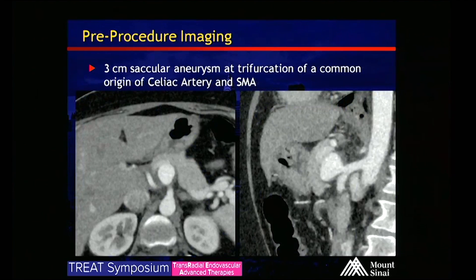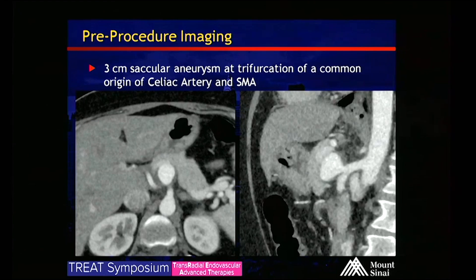On pre-procedure imaging, you can see this 3-centimeter saccular aneurysm, which is at a trifurcation of a common origin of the celiac and SMA. You can see on the axial and sagittal images there, we have the 3-centimeter aneurysm.